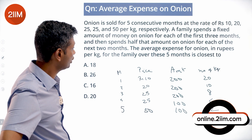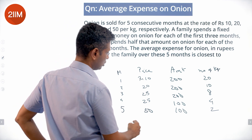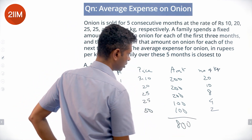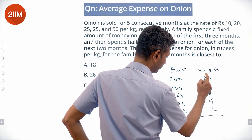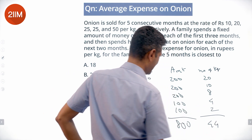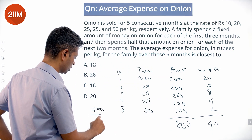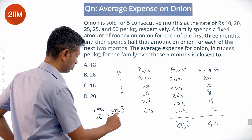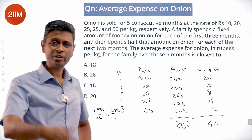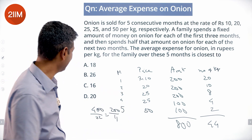We need to find the average expense for onion in rupees per kilogram over these five months. Total amount spent: 200+200+200+100+100 = 800. Total quantity: 20+10+8+4+2 = 44 kg. Average = 800 divided by 44, which is 400/22, which is 200/11, approximately 18.18 rupees per kilogram.